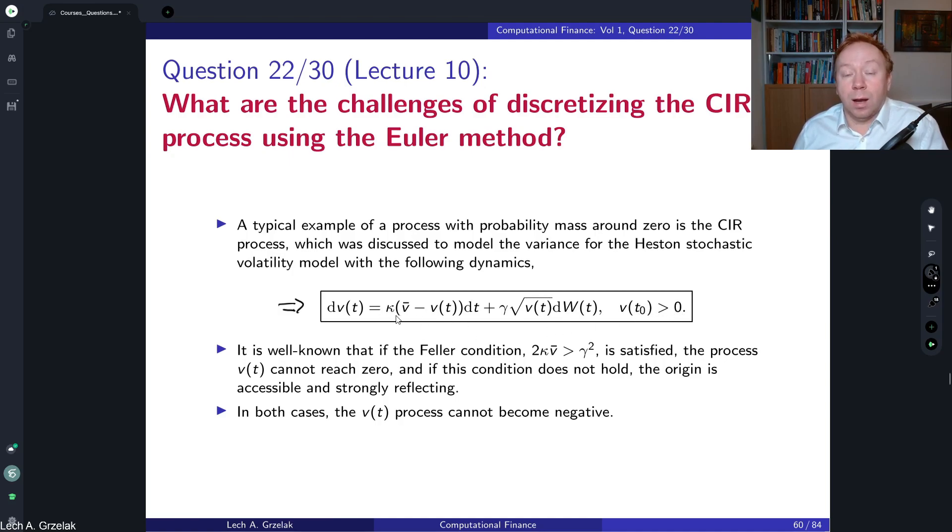We have a mean reversion element, so the variance can go up and down and mean reverts to the long-term mean, and also it has a volatility. This process is very popular because the solution has non-central chi-square distribution, and it's of much fatter tail than other commonly known distributions like normal or log-normal.